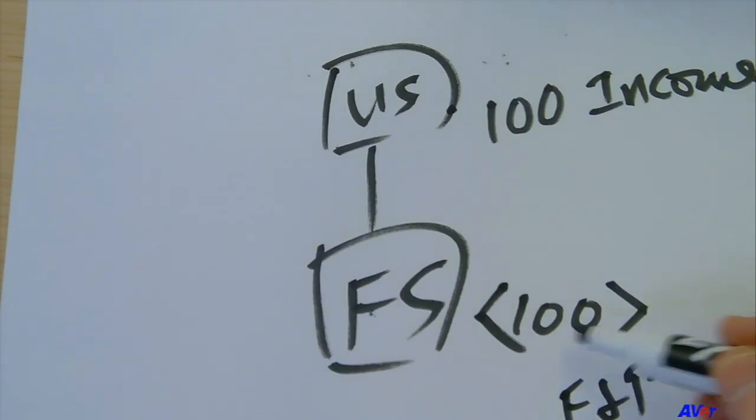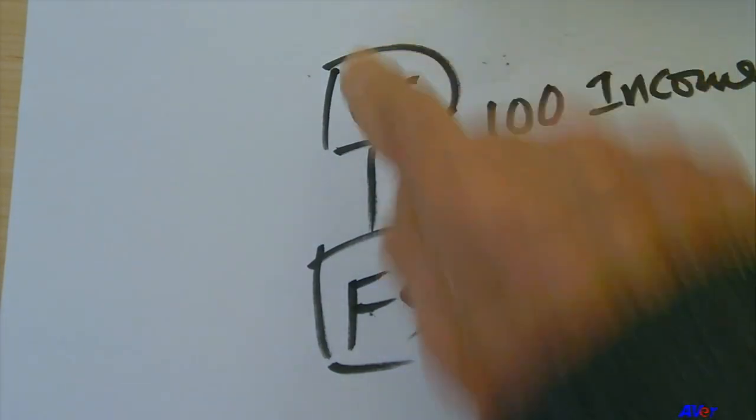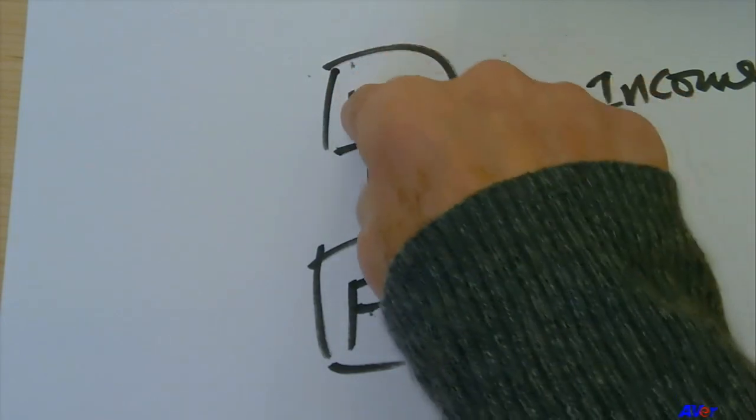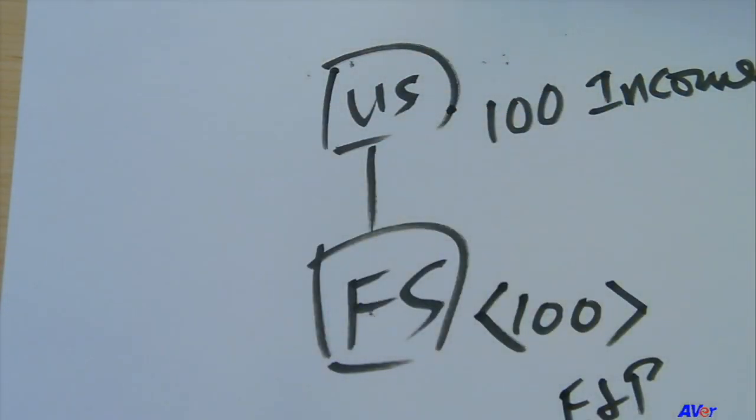Now, today we have GILTI. So the reduction in 100 may well reduce the amount of GILTI, which the U.S. company, the parent, will realize under the new GILTI rules. So this second type of adjustment may have an effect in this type of situation.